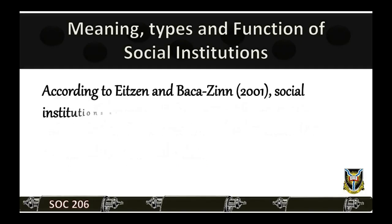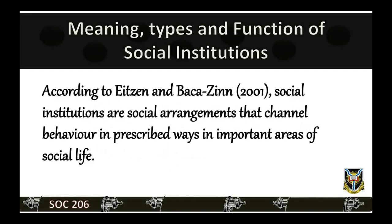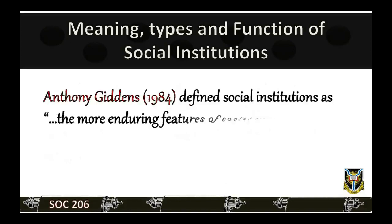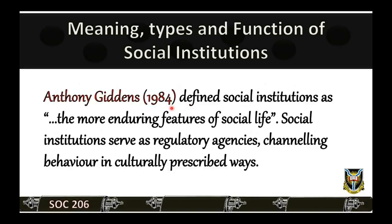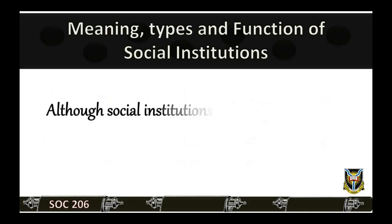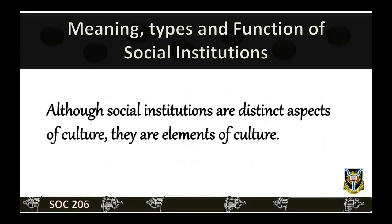According to Ed Zinn and Bakazin (2001), social institutions are social arrangements that channel behavior in prescribed ways in important areas of social life. Anthony Giddens (1984) defined social institutions as the more enduring features of social life. Social institutions serve as regulatory agencies channeling behavior in culturally prescribed ways. Although social institutions are distinct aspects of culture, they are elements of culture.